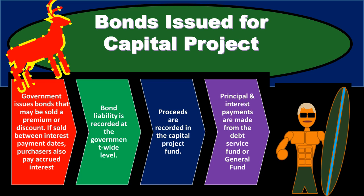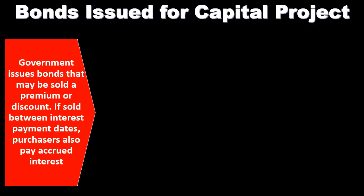On the fund side of things, we're typically thinking of governmental-type funds. The governmental funds often involved when we have bond issuance are the capital project fund — because that's what we're issuing bonds to fund — as well as the debt service fund, which is used to service the debt. These are governmental-type funds and they operate on a modified accrual basis, as opposed to the government-wide activity which is on a normal accrual basis.